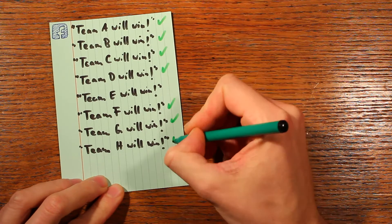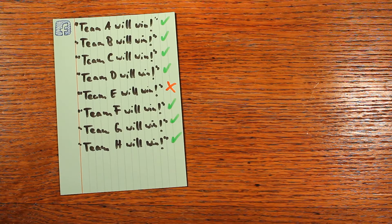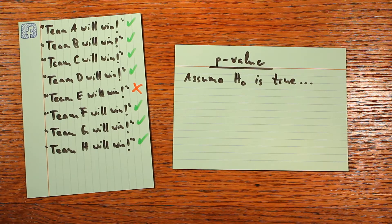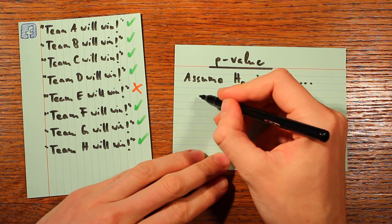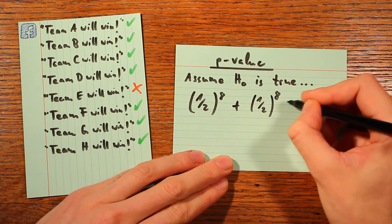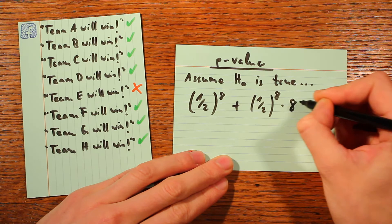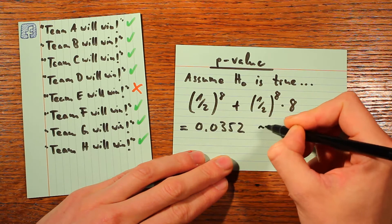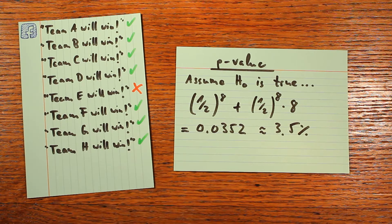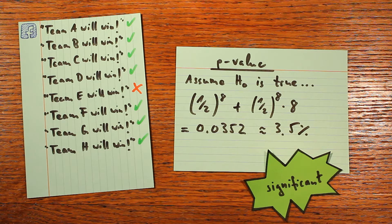Now let's look at the case where you got 7 out of 8 games right. If for each match you just have a 50-50 chance of predicting the correct result, your chances of getting at least 7 out of 8 right is the chance of getting all 8 right, plus the chance of getting exactly 7 right — and we multiply by 8 because there are 8 different positions where the one wrong prediction might occur. This sum comes out at around 3.5%, so this result too is statistically significant. In other words, if you were a complete football fool, your chances of getting at least 7 out of 8 predictions right would be less than 5% — less than 1 in 20 — and that's the kind of result that would convince your friends, and also a statistician.